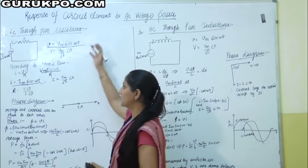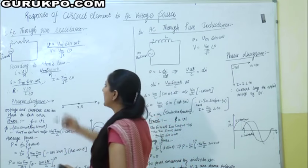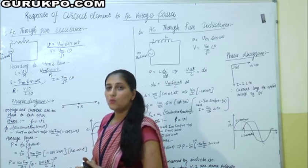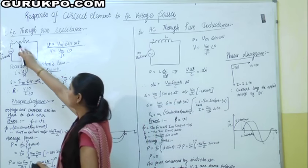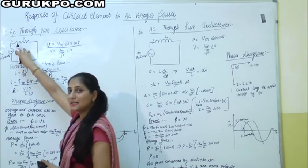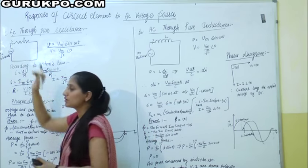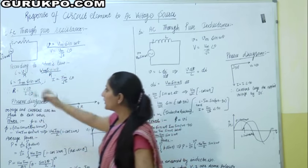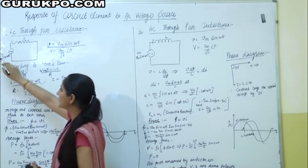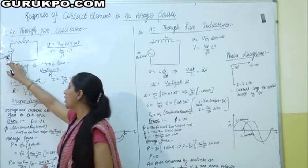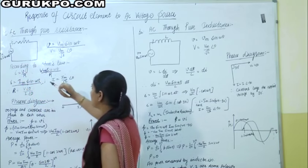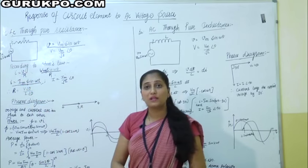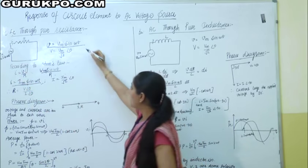Starting with the resistor — AC through pure resistance. We have a circuit in which we connect a resistor through a sinusoidal voltage source. The voltage will be V = Vm sin(ωt). This is our supply voltage V = Vm sin(ωt).